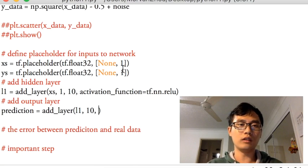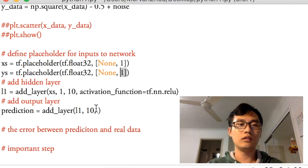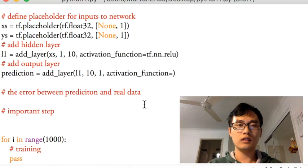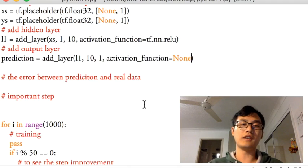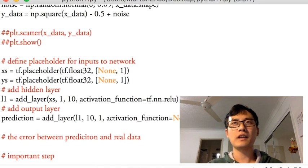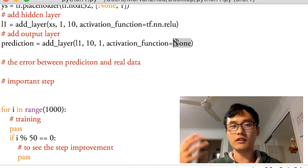And output size will be this one, because we are going to predict just one number. So this is the output size. And the activation function, we're going to use in here, we just don't use anything. Put None, because this one is a regression problem. So I just use None to represent a linear function.